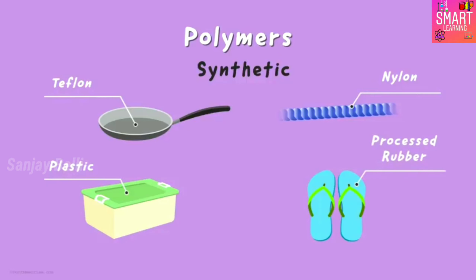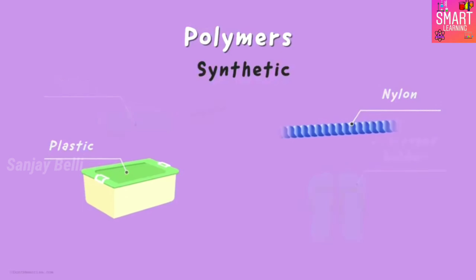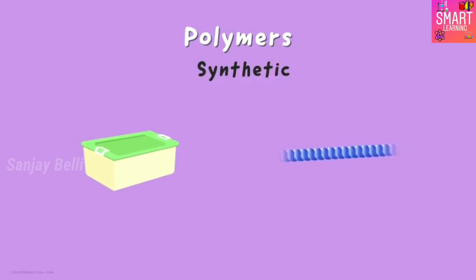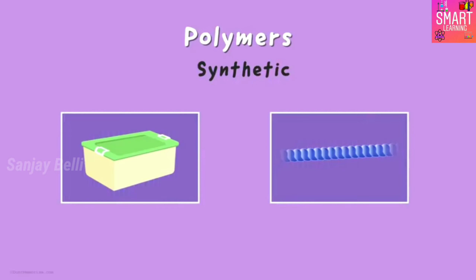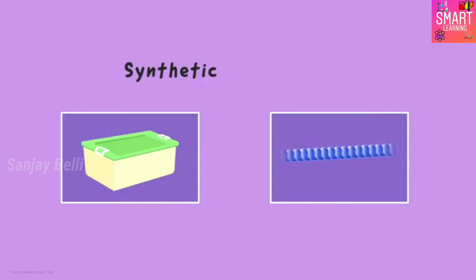Among all these examples, we are going to focus on the rope and the container. We will focus on these two because we need to understand the concept of synthetic fibers and plastics.